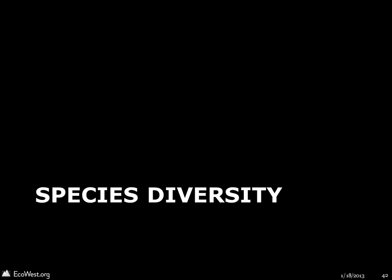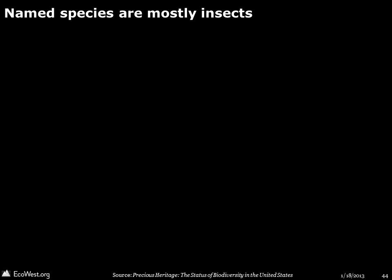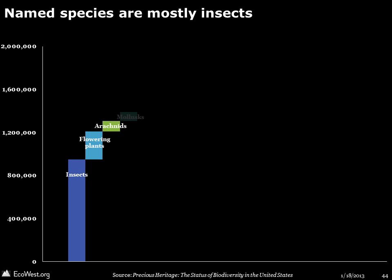Now let's turn to species diversity, one of the key metrics used to analyze biodiversity. Nobody really knows just how many species there are in the world. Biologists have described fewer than 2 million species, but they know that many more exist, especially among insects. This graphic shows the breakdown of named species. Well-known species such as birds and mammals aren't so numerous compared to insects, plants, and arachnids.